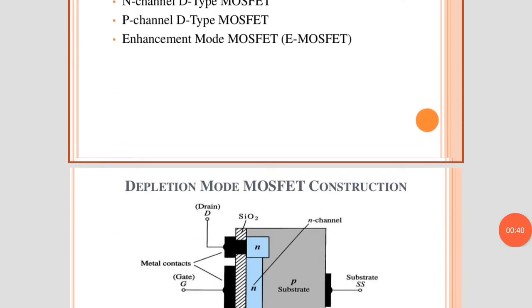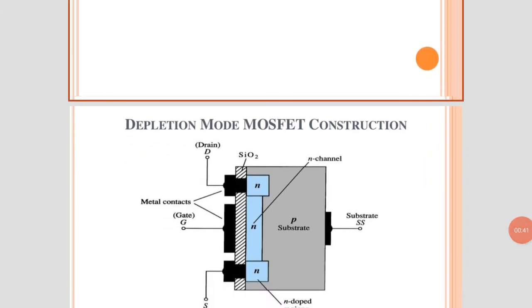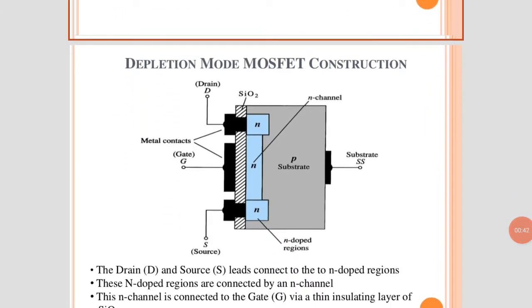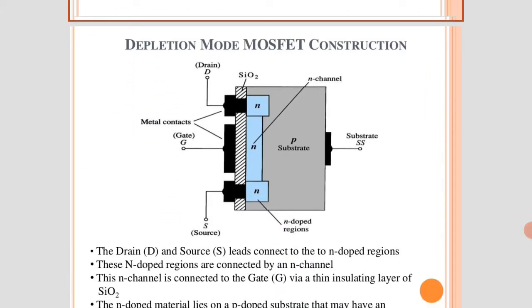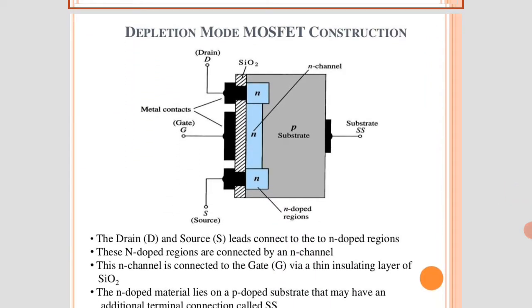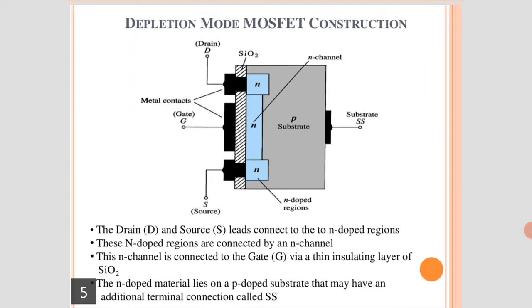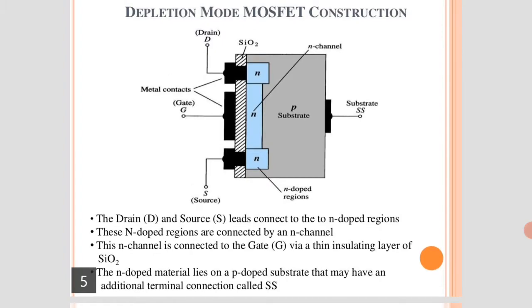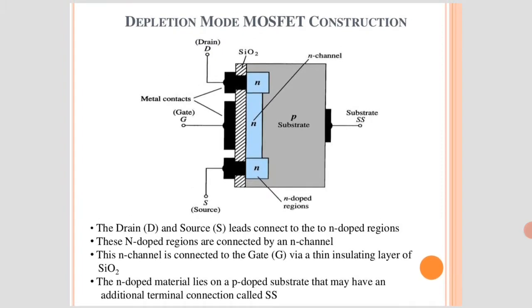First we see the depletion mode MOSFET construction. The depletion mode MOSFET construction is as shown in figure. The materials involved are SiO2 (silicon oxide), N-channel, P-channel, and P-substrate.